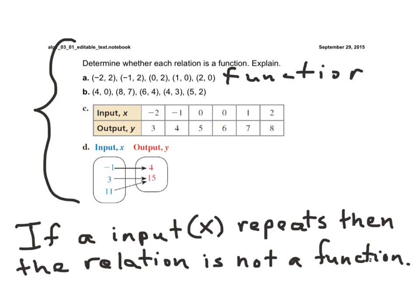Now, letter B, if you notice, 4 is paired with 0, but 4 is also paired with 3. Since 4 is paired with 2 different y values, that is not a function.